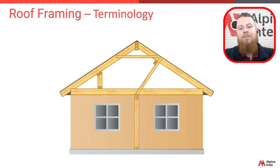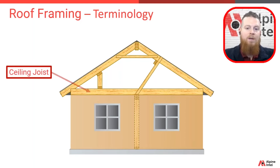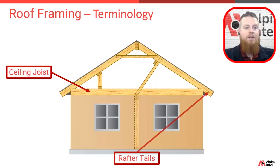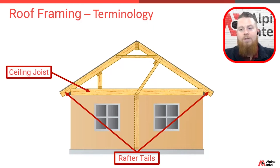Inside the attic space of this gable-style roof, I want to identify a few more important framing pieces. First up is ceiling joists — they're the framing pieces that bridge the gap between your finished space and ceiling and the attic space. Rafter tails are the sections of rafters that overhang the exterior wall. They're often used for the framing of the eave or the eave soffit area.